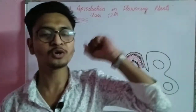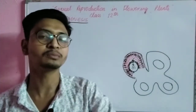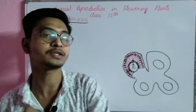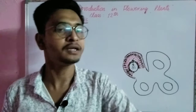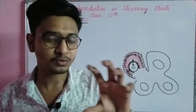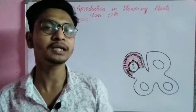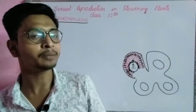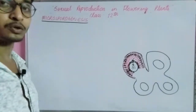Hello my dears, today we are going to study the process of microsporogenesis — Class 12 Biology, Sexual Reproduction in Flowering Plants. Today we are going to study the four walls of the flower and the structure of the anther and its four wall layers.